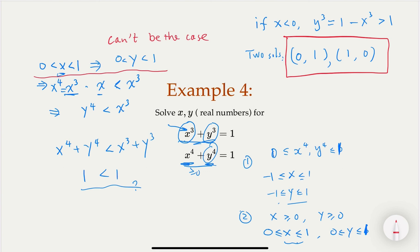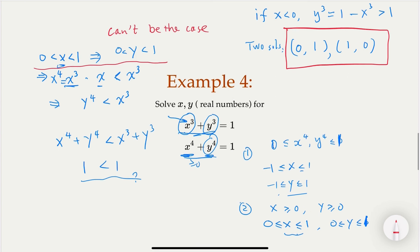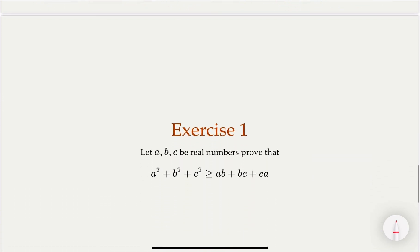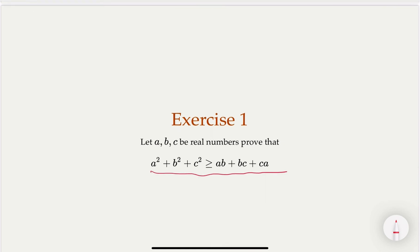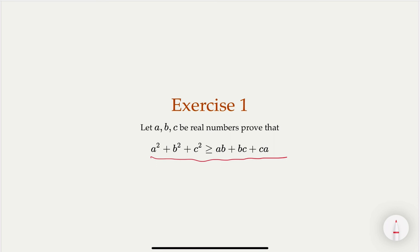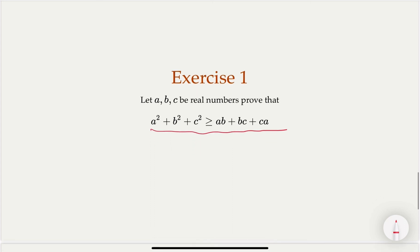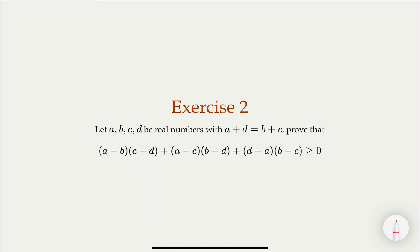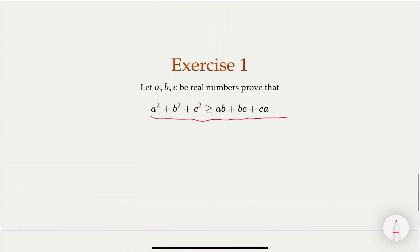All of this relies on fundamental inequalities about real numbers: positive versus negative, and squares being non-negative. There are two exercises — one is a very commonly used inequality you've probably seen before, and another which is more challenging involving real numbers satisfying a given constraint. We'll provide answers in a separate video in a few days. Please subscribe to the channel and leave comments if you know the answers. See you next time!